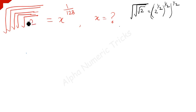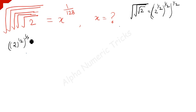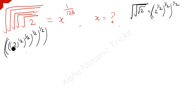Here, 2 to the power — how many roots are there? 5 roots. So we write this to be 2 to the power 1 over 2 for the first root, and for the second root 1 over 2, and this is for the third root, and this is for the fourth root, and this is for the fifth root — which is equal to x to the power 1 over 128.